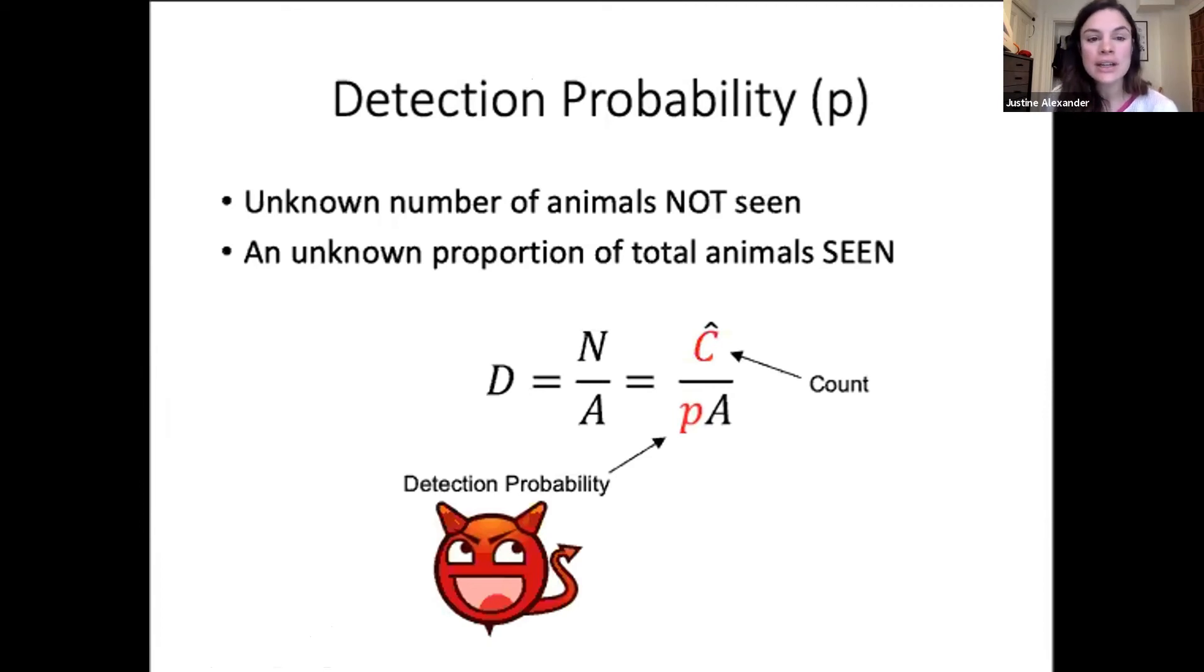What we need to do is fix that bias by introducing this new parameter called the probability of detection next to area. This will help us estimate the true density while accounting for detection. As you remember from module one, this detection probability is like a devil that we need to address all the time, not only in population distribution surveys, but also population abundance. In camera trapping with spatial capture recapture, we also try to account for this detection probability.